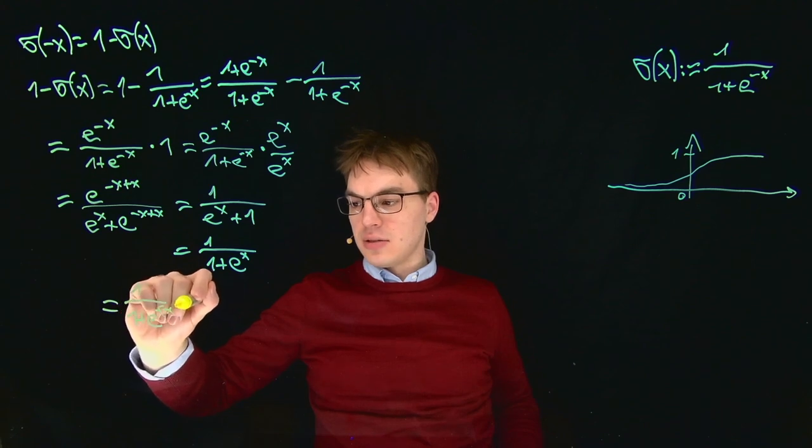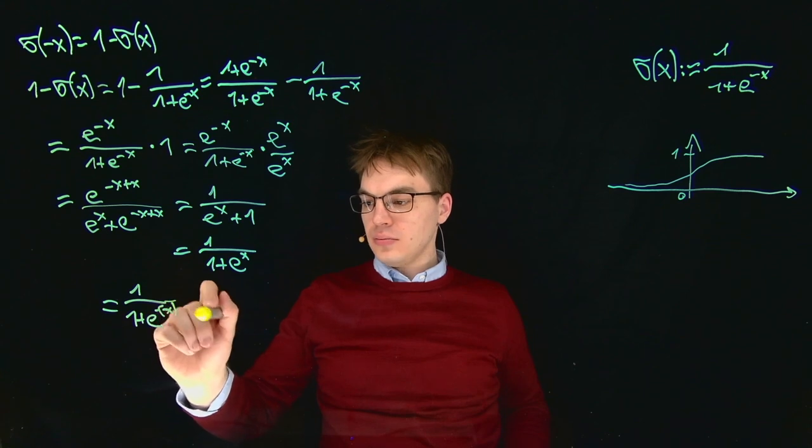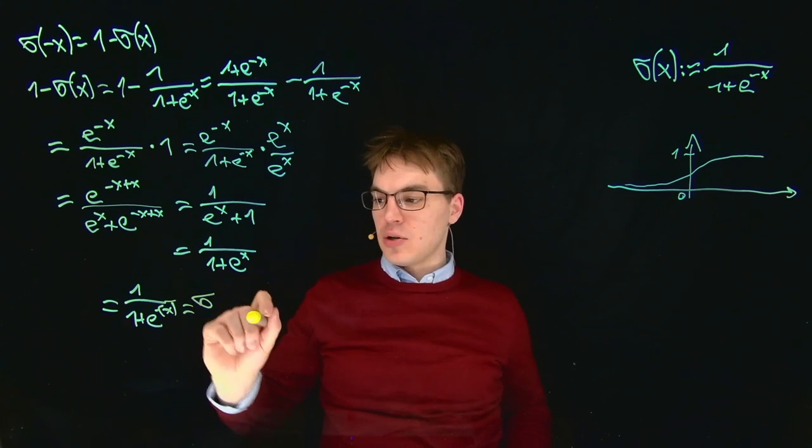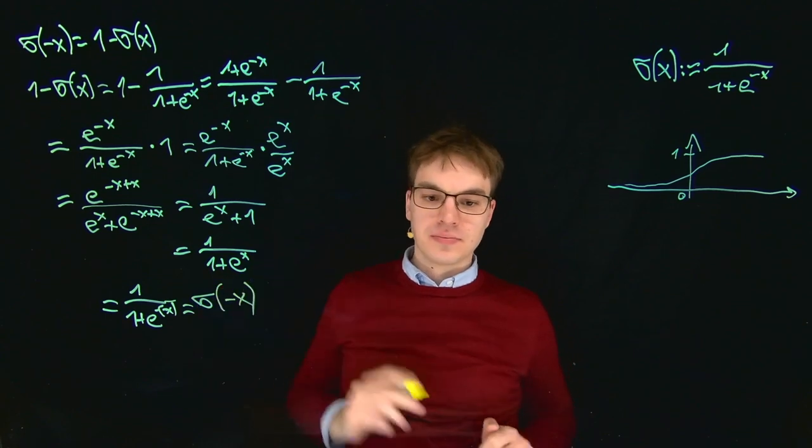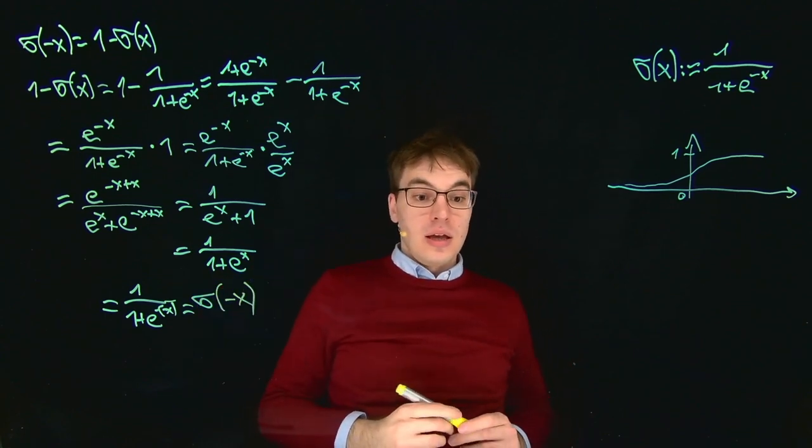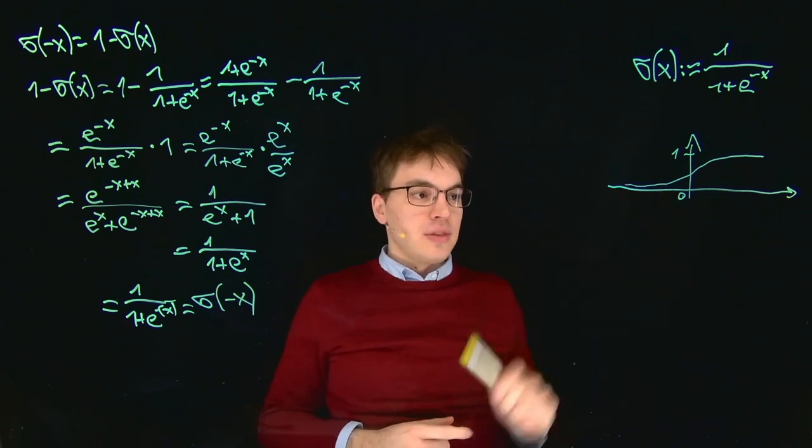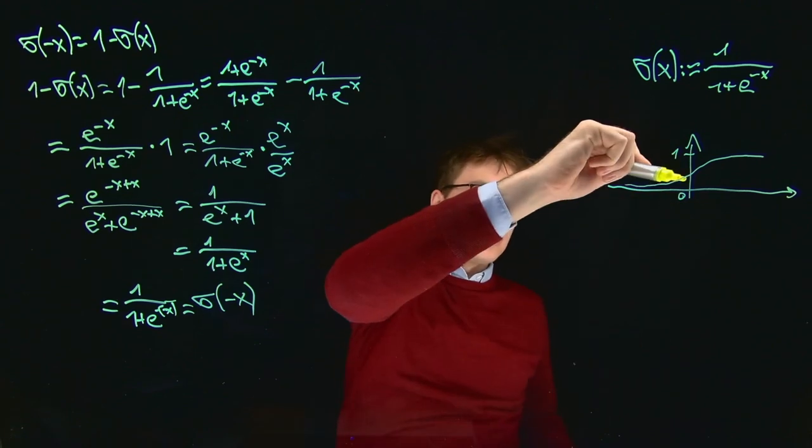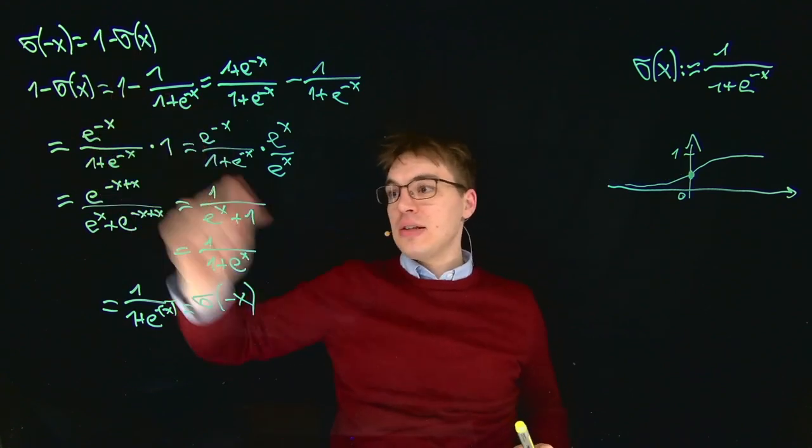So double negative minus X, and this is just sigmoid of minus X. And what does this actually mean? If we have a look at this plot, then we can see that there's a point symmetry in this point, and we even proved this with this equation over here.